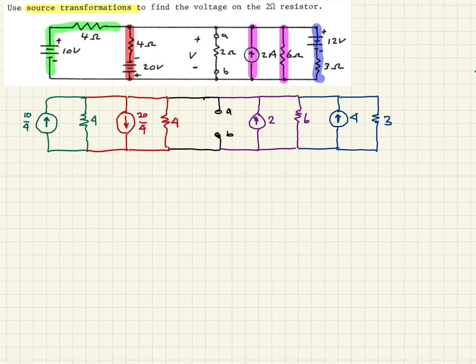Now we have just a parallel network of current sources and resistances, so we can combine all of those. For the current sources we'll find I-total by summing them all up. Defining current entering the top node as positive: the first one in green is 10 over 4; next we have minus 20 over 4 since it's leaving the node; then plus 2, which is entering; and plus 4, which is also entering.